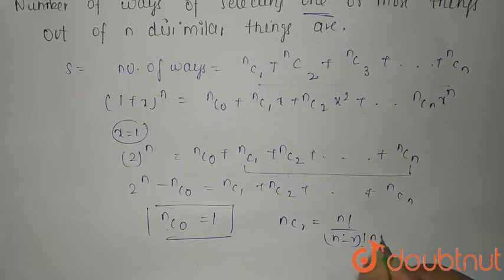Now the value of nC0 is what? 1. Why? Because nCr is n factorial divided by n minus r factorial into r factorial. So nC0 will be n factorial over n minus 0 factorial times 0 factorial, that is n factorial over n factorial times 1. So n factorial is cancelled. The value is 1.